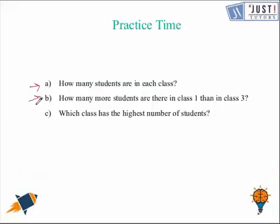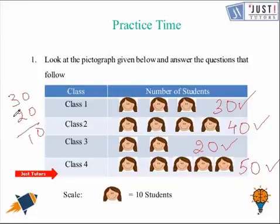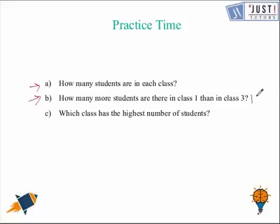Now the second question says, how many more students are there in class 1 than in class 3? That means we need to compare the students of class 1 and class 3. So in class 1 we are having 30 students. In class 3 we are having 20 students. We need to find the difference between them. So 30 take away 20, which is simply 10. So the answer for question number 2 is 10 students.